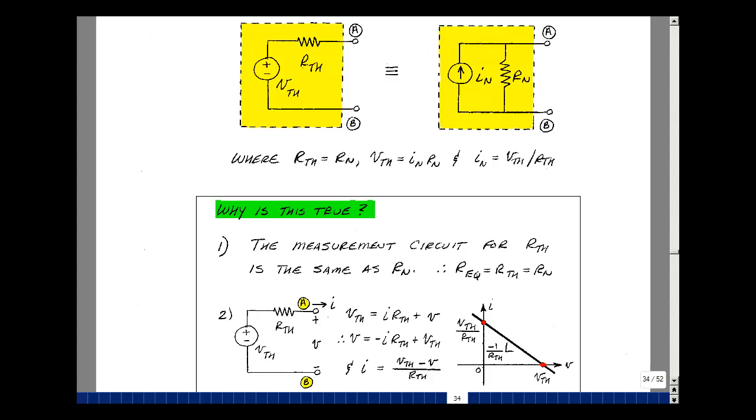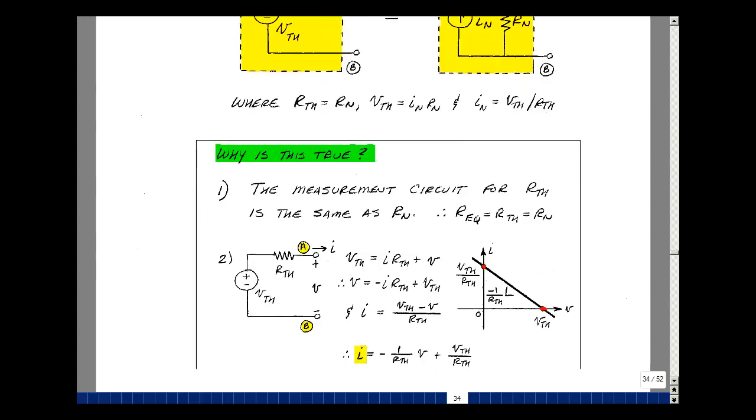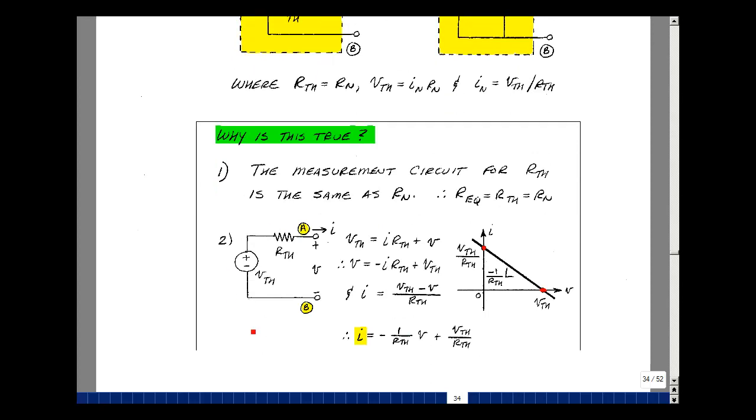Now let's take the Thevenin-equivalent circuit, which is just a voltage source in series with a resistance, and let's write that circuit in terms of its output, the voltage and the current, and allow all possible values of voltage and current. The rise in voltage would be V Thevenin, the drop would be I times R Thevenin plus the voltage V. Let's solve for V.